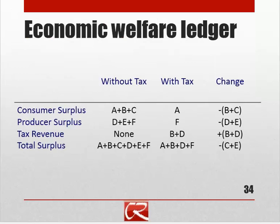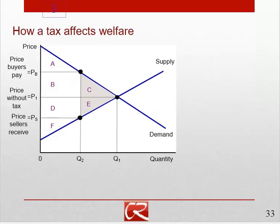If we drop a little ledger here of the economic welfare, we can track the changes. Although B and C are lost from consumer surplus, B at least shows up as tax revenue, whereas C does not — so C is deadweight loss. The negative change in total surplus is deadweight loss. D and E are lost from producer surplus, but at least D shows up as tax revenue, while E is part of deadweight loss. This brings up a subtle, perhaps counterintuitive point: the taxes that you actually pay are the good part of taxes, because the purpose of taxes is to raise revenue. The really bad part of taxes is the deadweight loss — the transactions that were discouraged by the taxation and the decrease in economic efficiency that results.